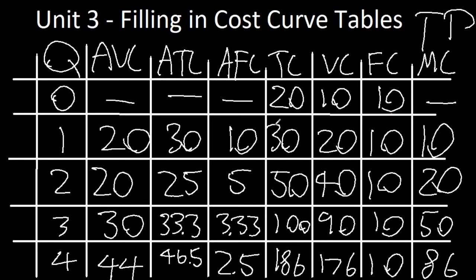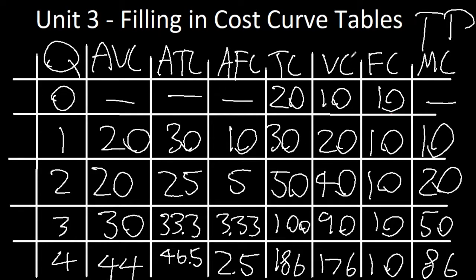So now we've completely filled in the table. However, we need to check: does this make sense? Average variable cost pretty much works. For average total cost, it's first decreasing and then increasing again, like a swish. For average fixed cost, it's continually approaching a horizontal asymptote at zero. Total cost is increasing just as it should be. Variable cost is also increasing as it should be. Fixed costs remain constant. And marginal cost — although it's not going down and then back up in this case, the slope is increasing. I just could have chosen better numbers.